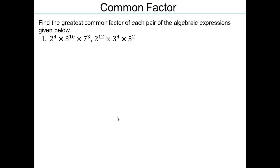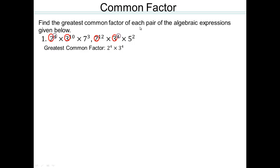For greatest common factor, we have to pick the lowest power. Here are two numbers — look at all the prime factors: 2, 3, 7, and 5. Which are common? 2 is common, so we include 2. For the exponent, we pick the smallest power: 4, not 12. For 3, we pick the 4th power, not the 10th. Since 5 and 7 are not shared, we only use common prime factors with the smallest exponent. That gives you the greatest common factor.